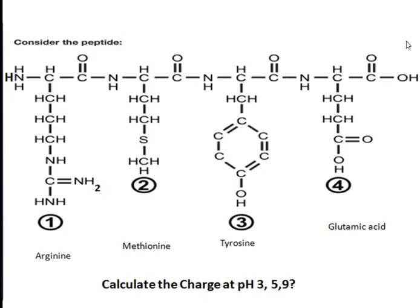Let us consider a polypeptide which consists of four different amino acids: arginine, methionine, tyrosine, and glutamic acid. The question asks us to calculate the charge of this polypeptide at three different pH values: pH 3, pH 5, and pH 9.